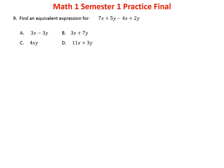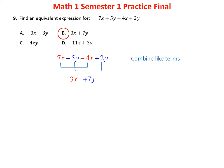Problem eight: we're combining like terms. 7x minus 4x is 3x, and 5y plus 2y is 7y. The answer is 3x plus 7y. Remember, you can only combine terms that have the same variable component — these are the y terms and these are the x terms, which is why we can combine the coefficients.